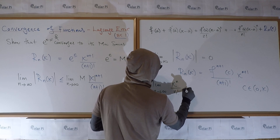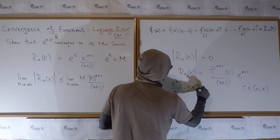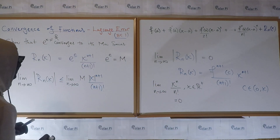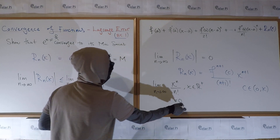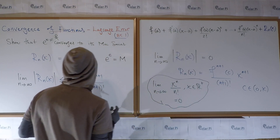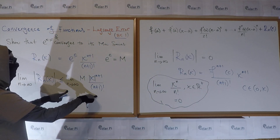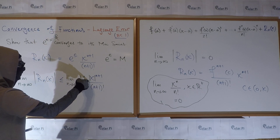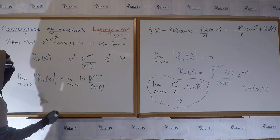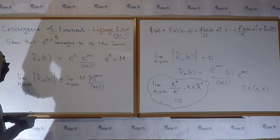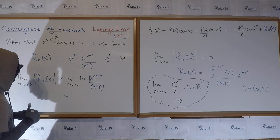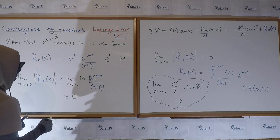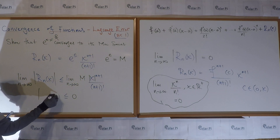That famous limit is: the limit as n goes to infinity of x^n / n! equals zero for x in the positive reals. Using this limit, the right-hand side becomes M times zero, which equals zero.